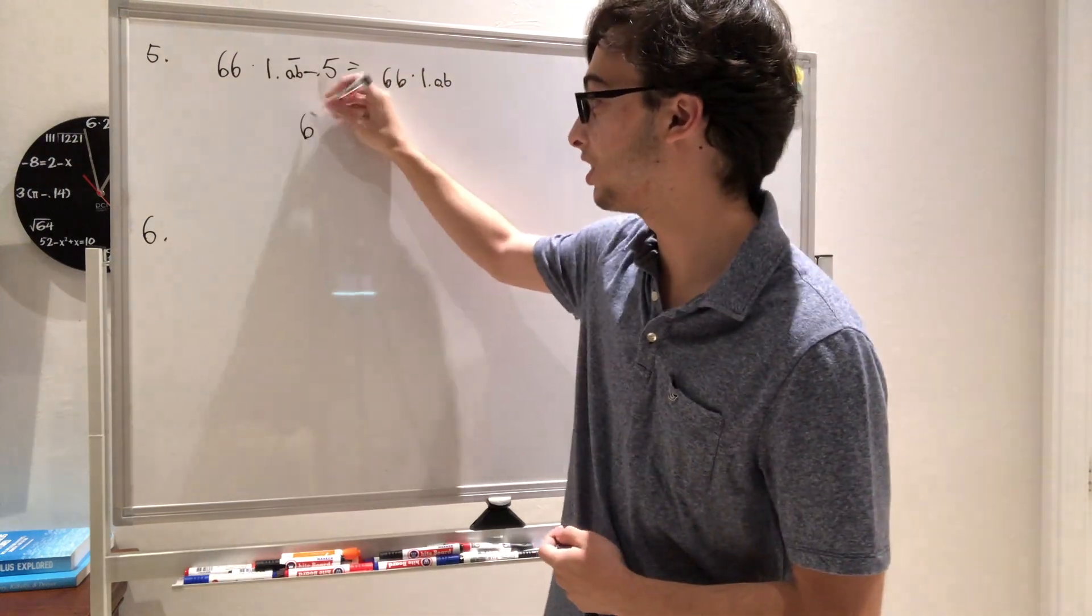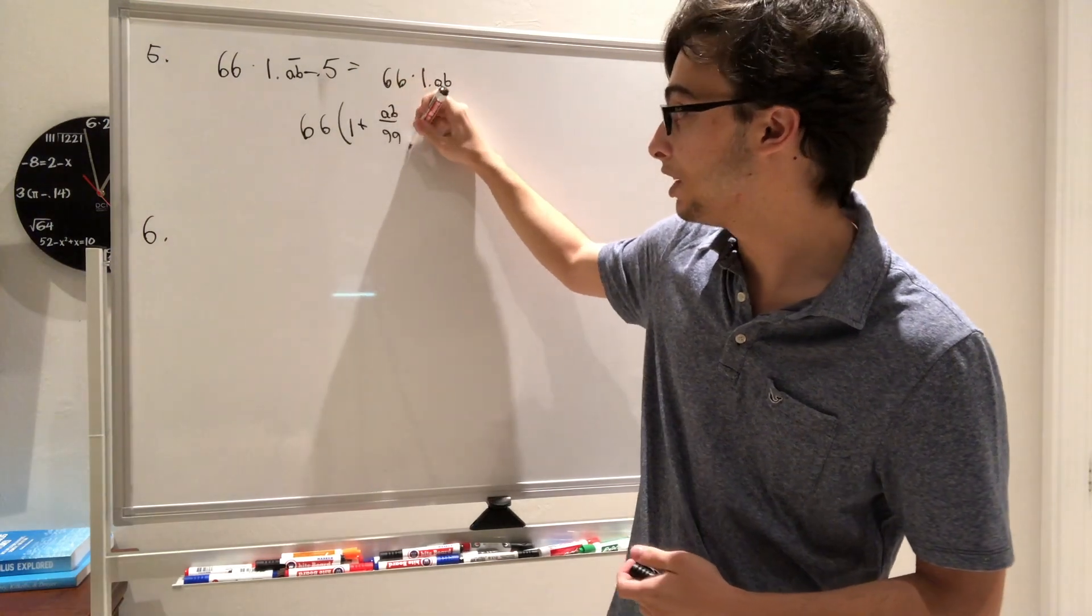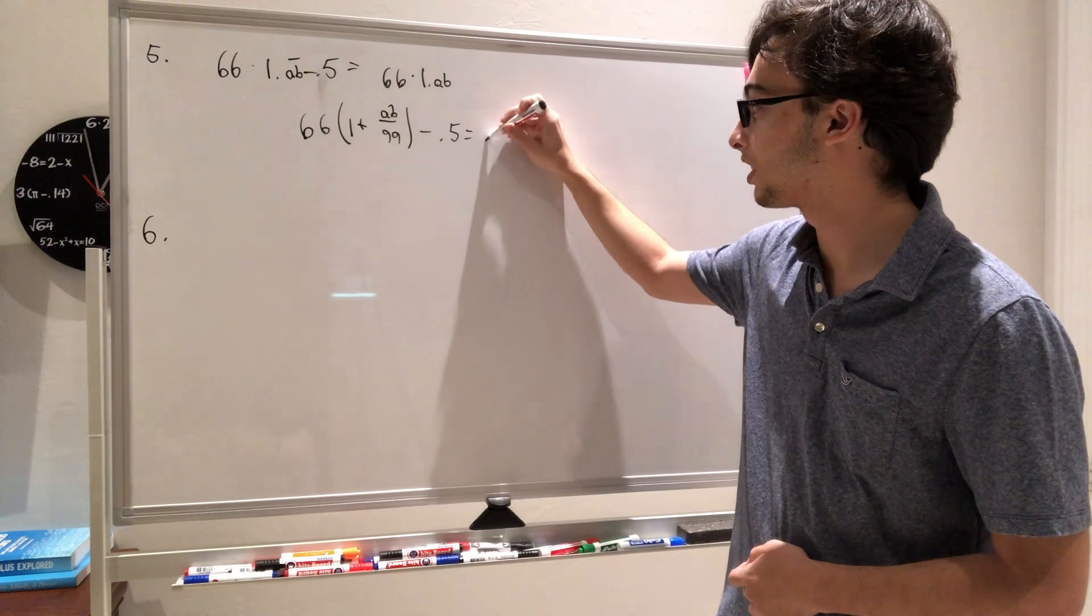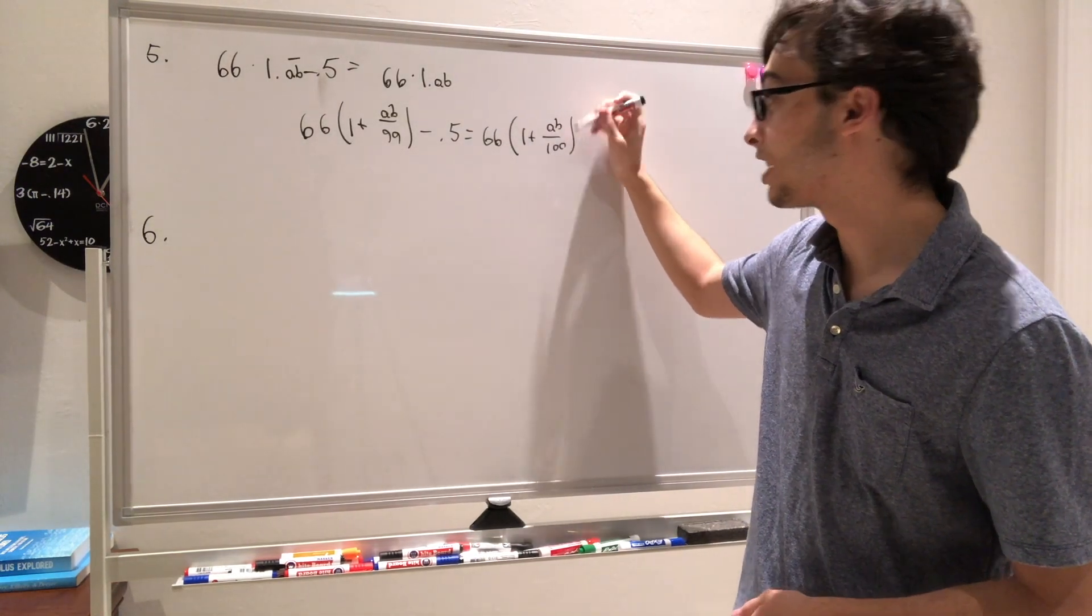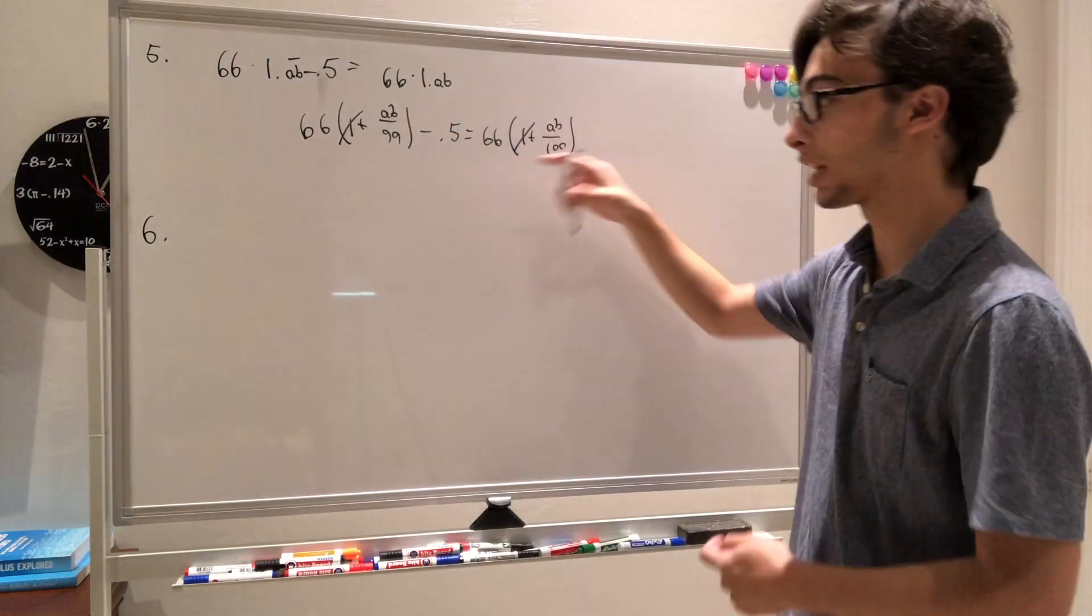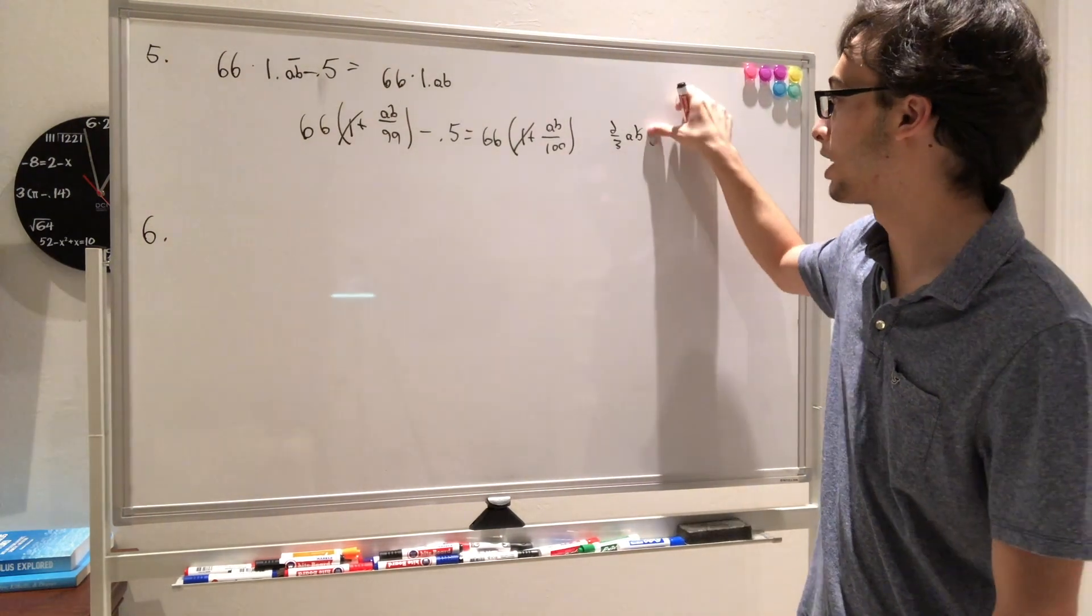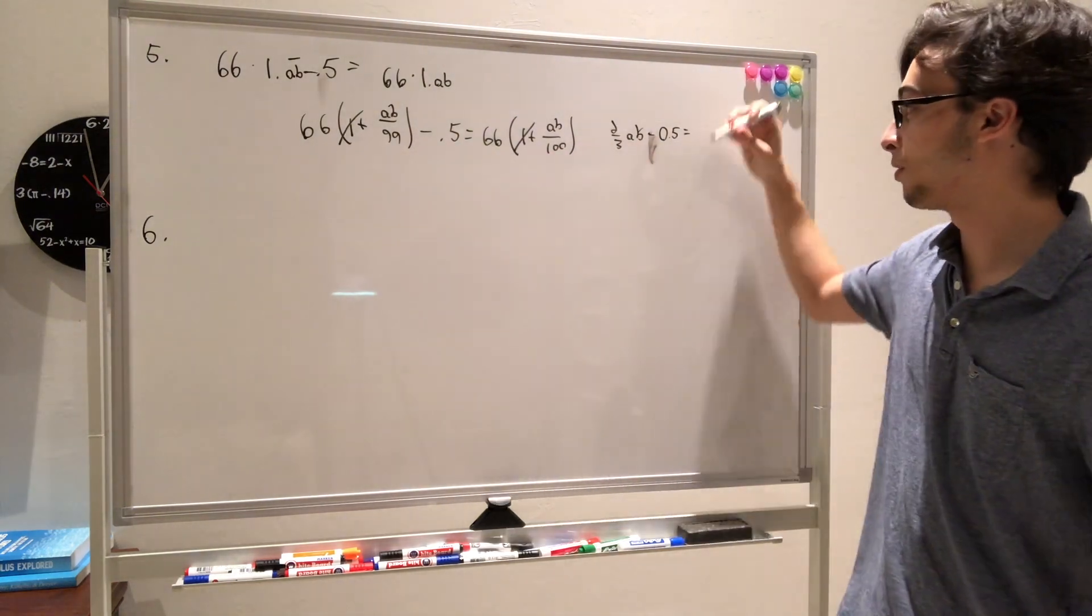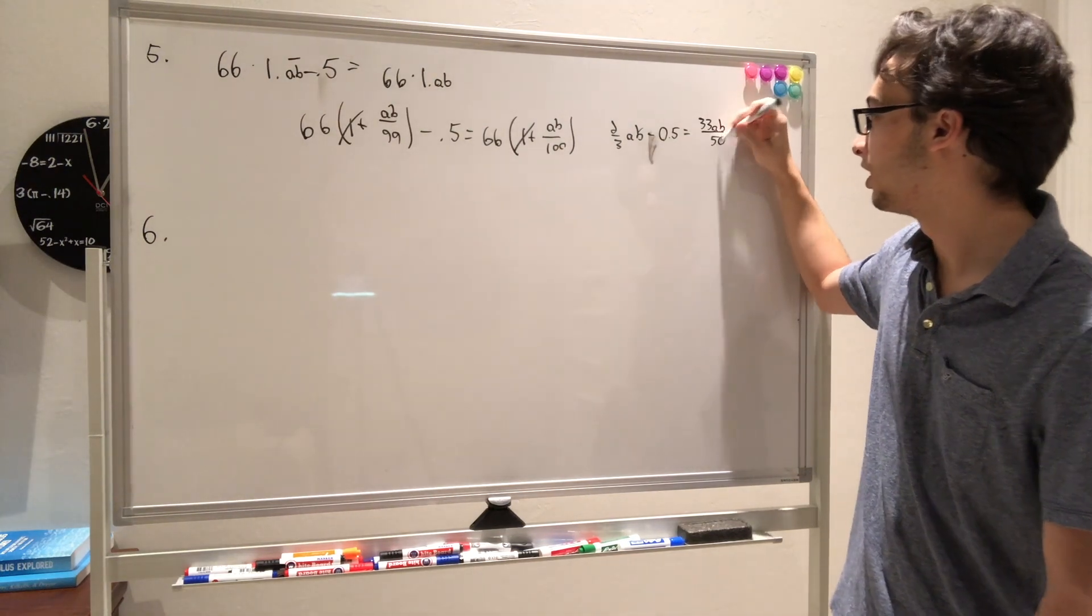In order to do this, I'm going to write AB as a fraction. So we have 66 times the quantity, 1 plus AB over 99, since it repeats, minus 0.5. It has to equal, on the right-hand side, we have 66 times the quantity, 1 plus AB over 100. So now I'm going to distribute the 66, and you notice this 1 is going to cancel. So we're going to get 2 thirds AB minus 0.5 equal to 33 AB over 50.